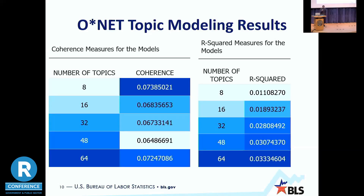Coherence is how well words are associated within a topic. You have a coherence measure for each topic within the model, and the final coherence measure is the average of all those for the entire model. The 8-topic model has the best coherence out of all models listed here. The 64-topic model has the highest R-squared — as you get more topics the model fits a little better, but the size of your corpus can counteract that.